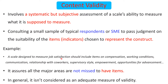For example, a scale to measure job satisfaction should include items on compensation, working conditions, communication, relationship with co-workers, supervisor style, empowerment, and opportunity for advancement. Content validity ensures that all these relevant areas are covered and none are missed when preparing the instrument. However, it is not considered an adequate measure of validity on its own because it remains a subjective assessment without any statistical scores or tests.